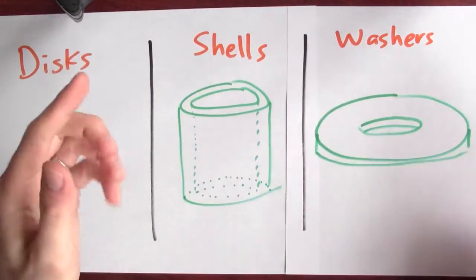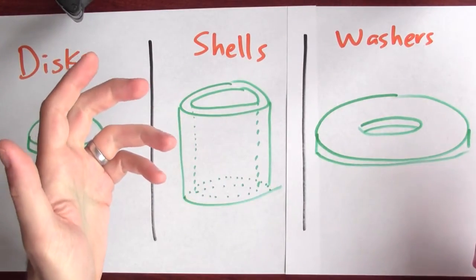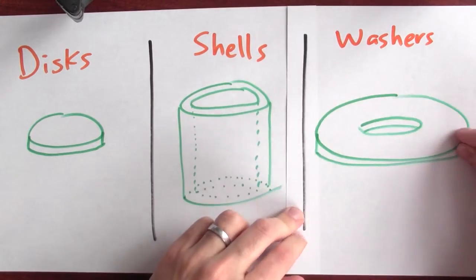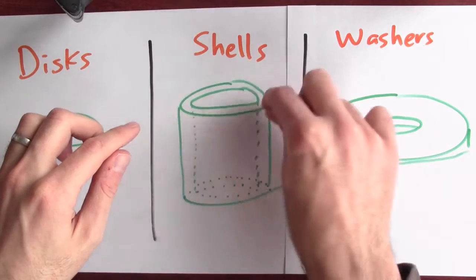Both shells and washers are things that you get by taking cylinders and drilling out other cylinders. But for washers, the thin dimension is its height. And for shells, the thin dimension is the thickness of this wall.